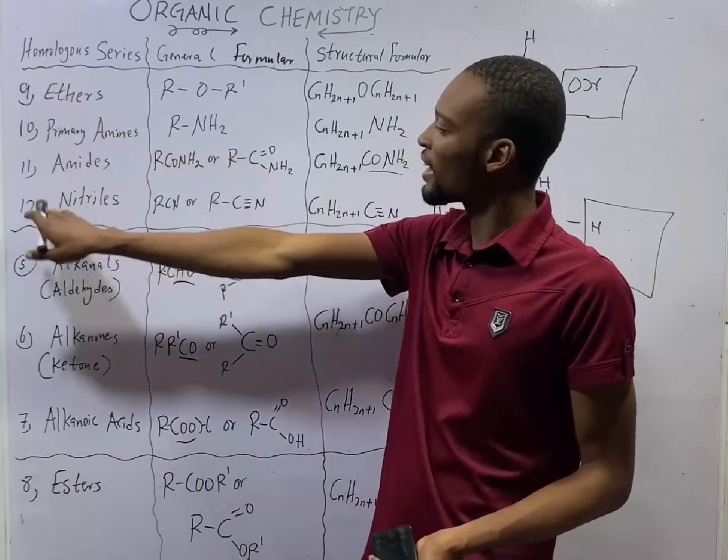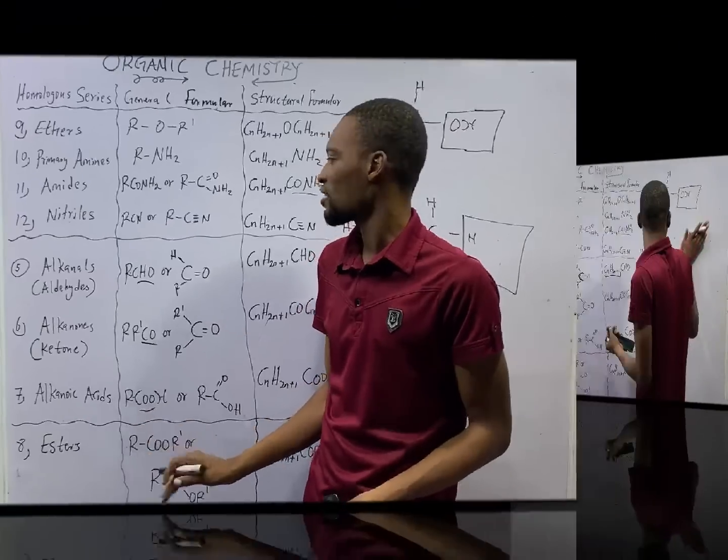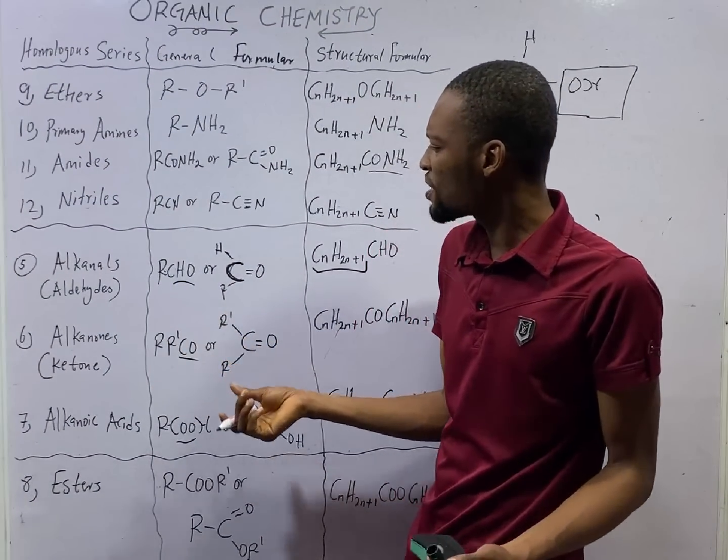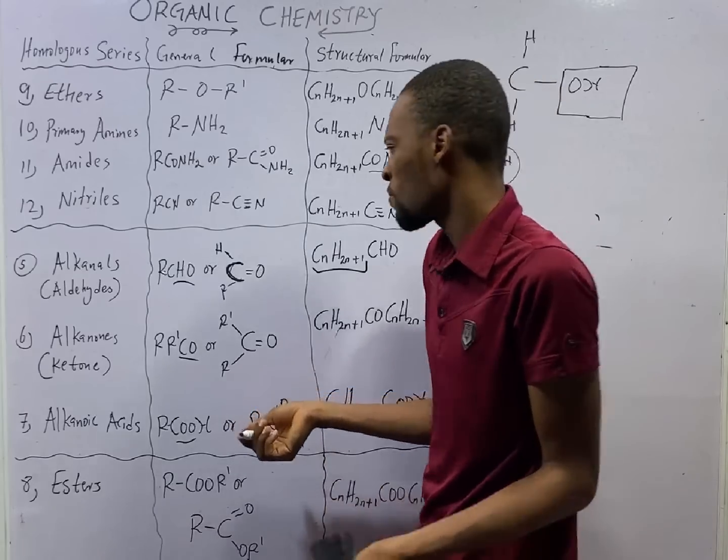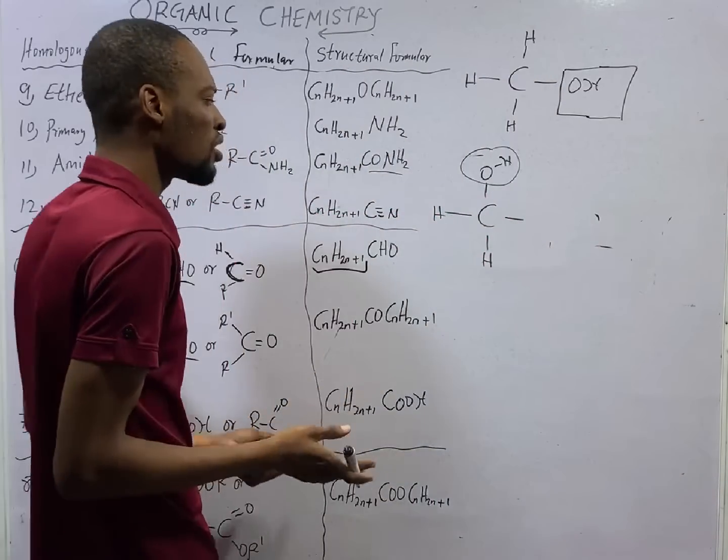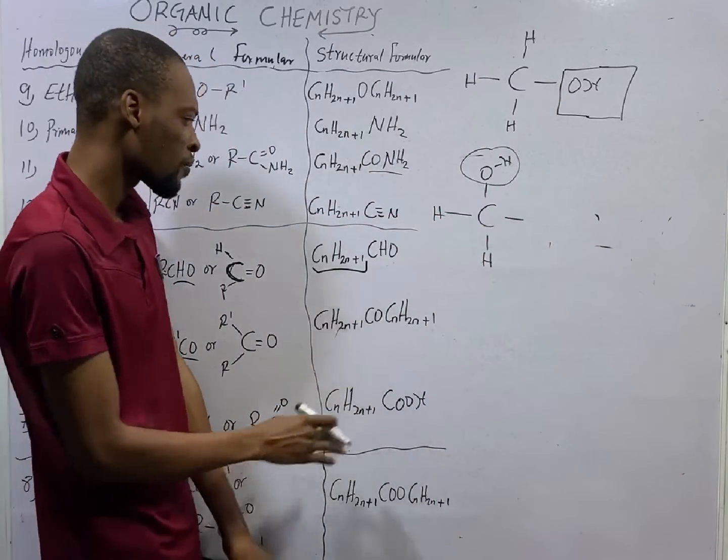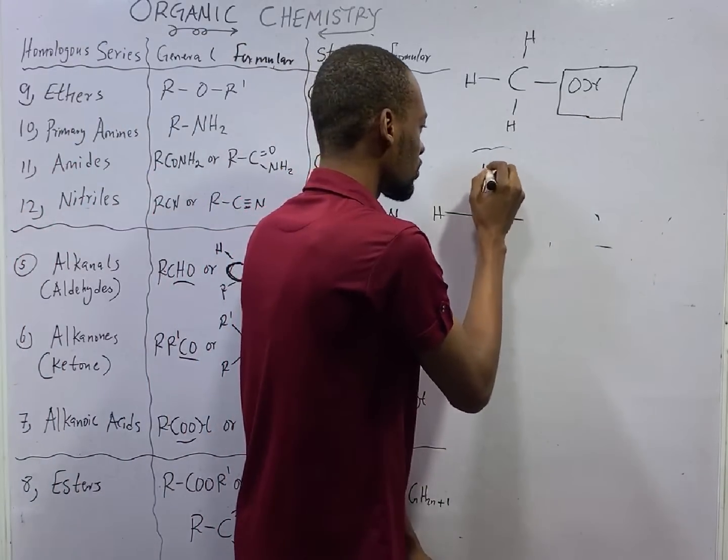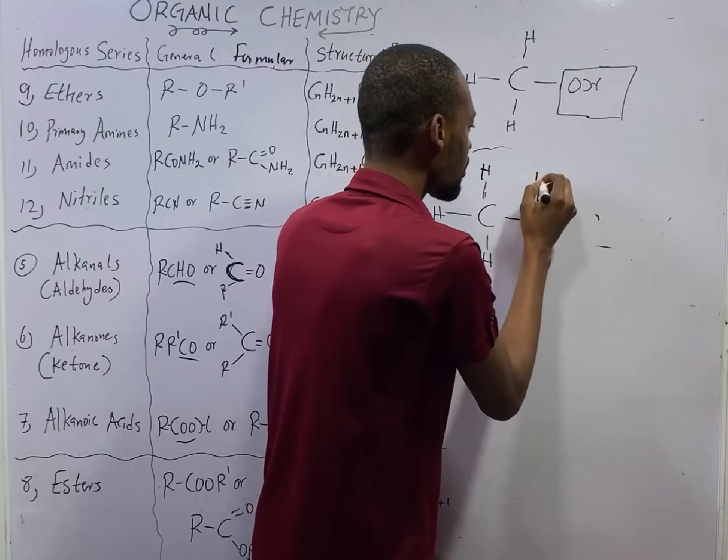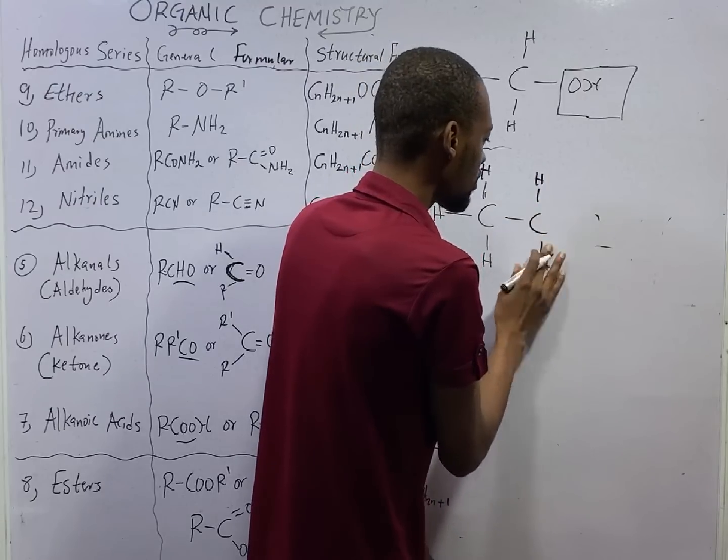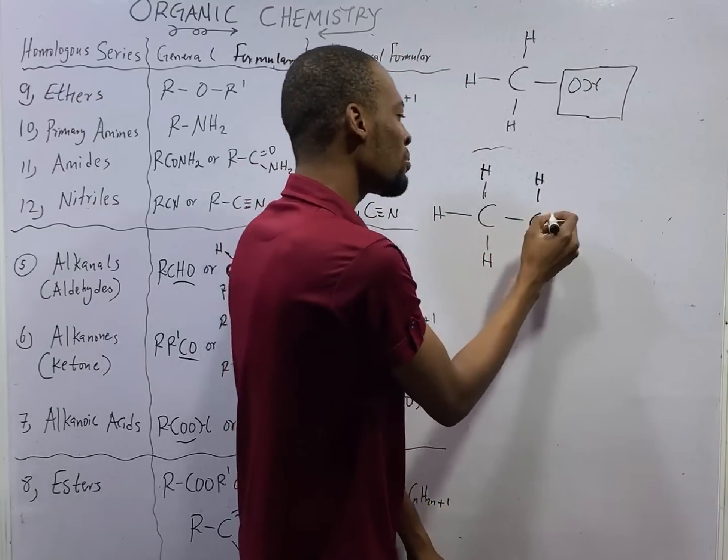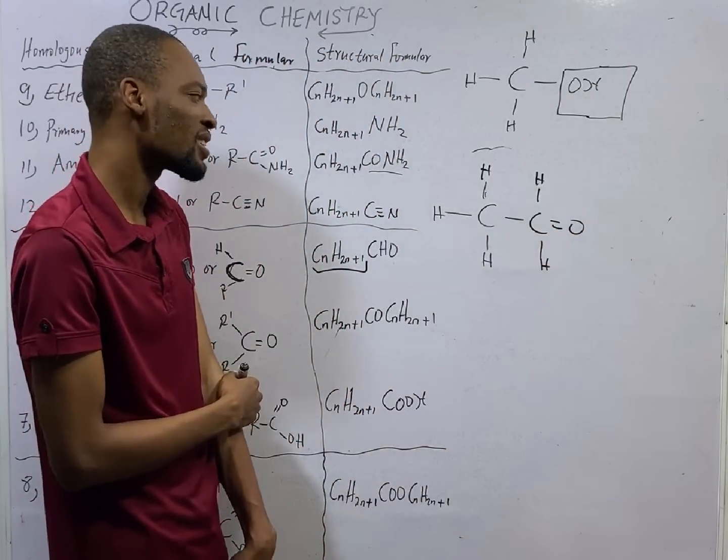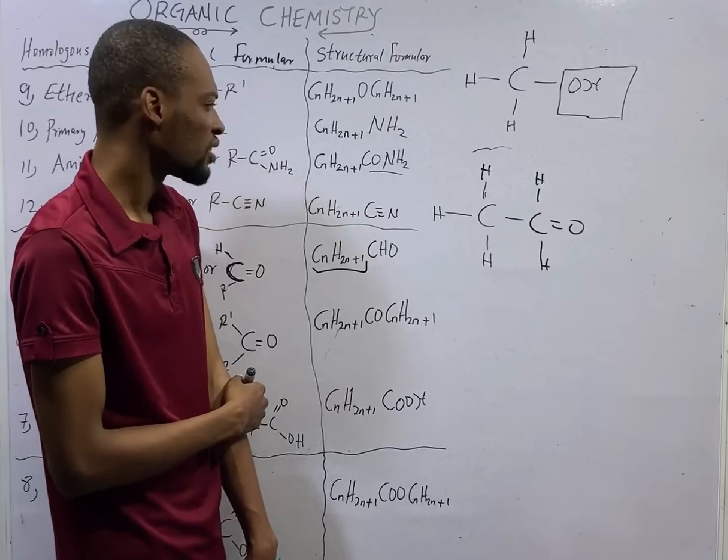For alkanals, the functional group is basically CO, or you say CHO, but CO is more appropriate. You have an alkyl group like this, let's say H, once this carbon at the terminal is attached to oxygen with double bond, this is an alkanal.